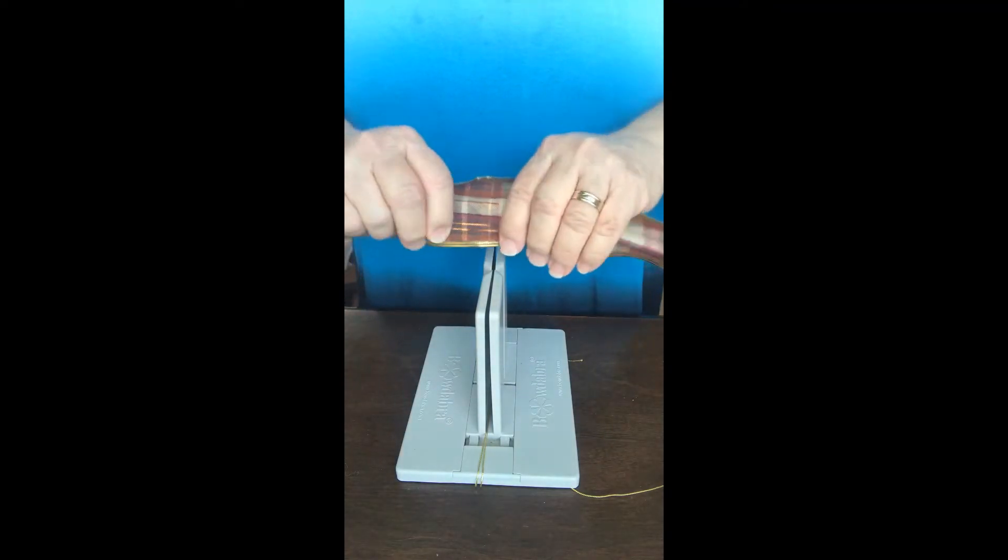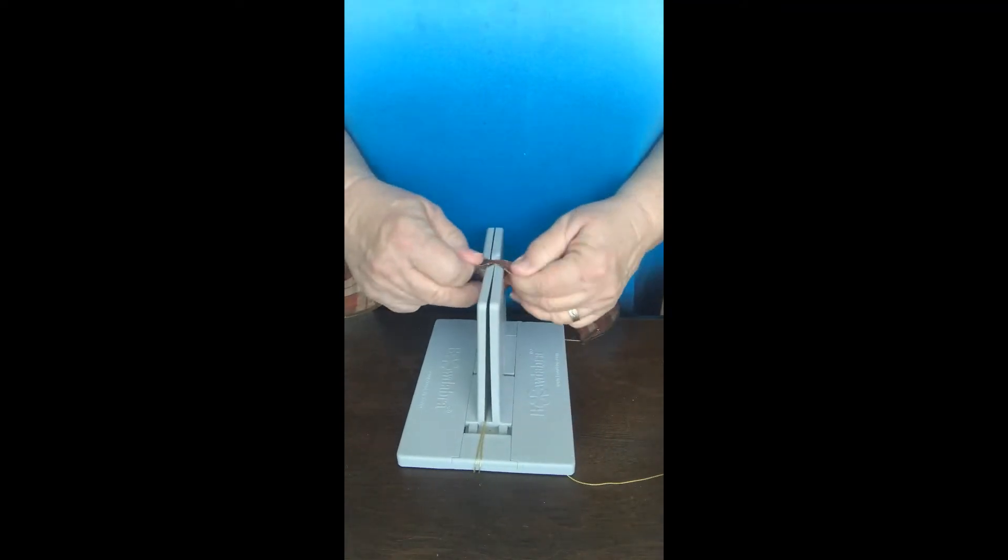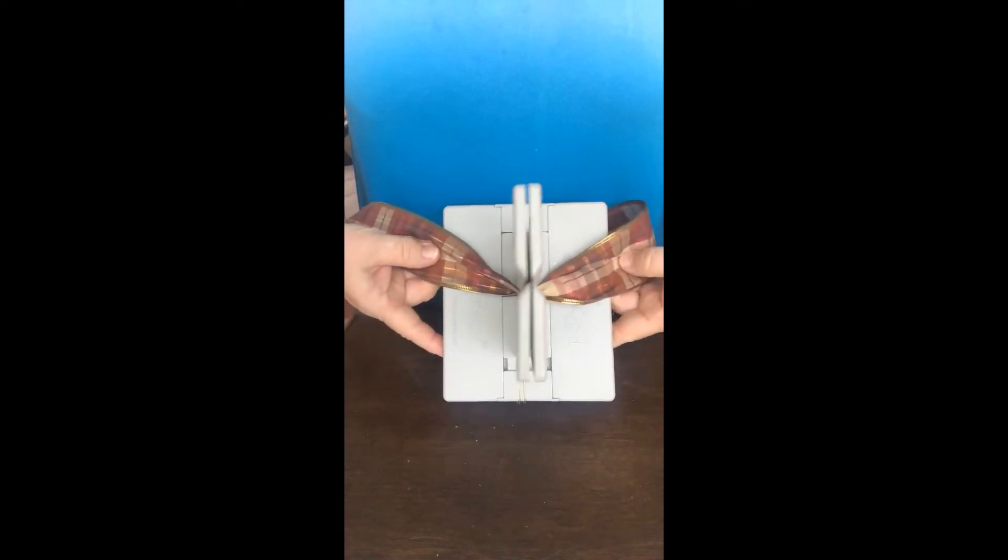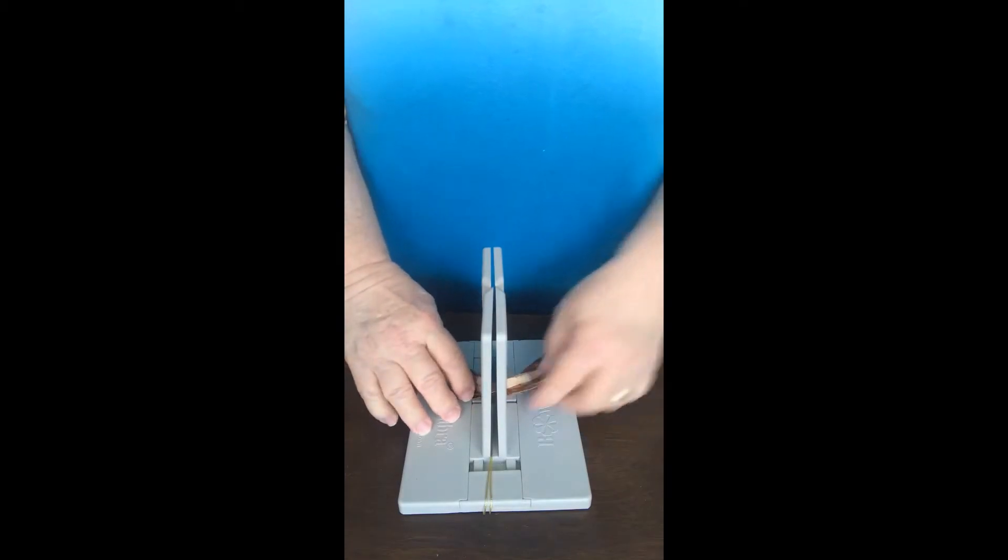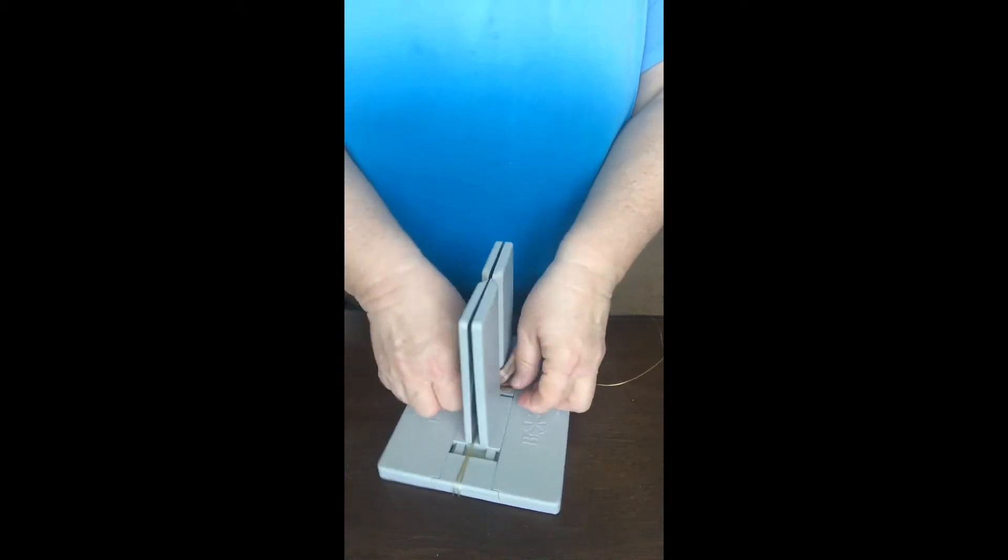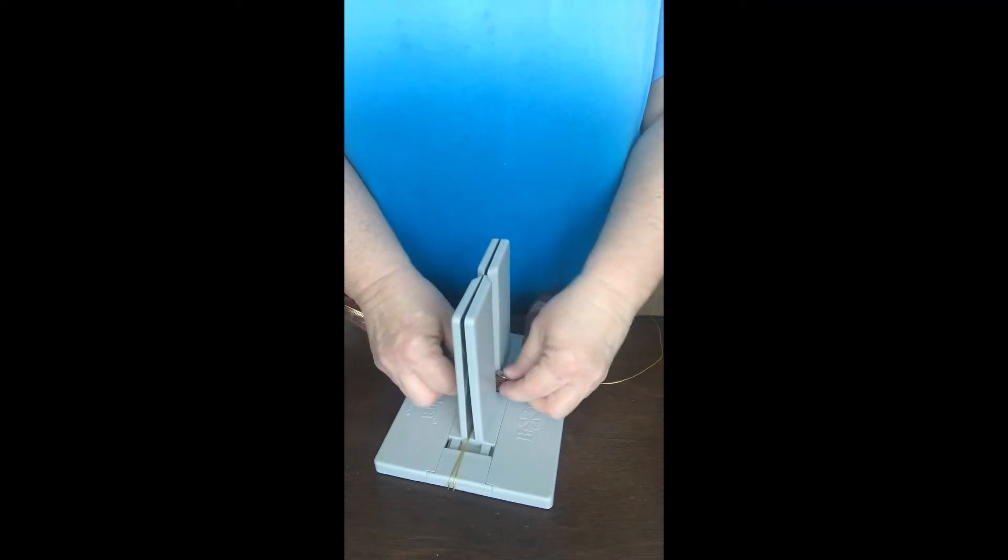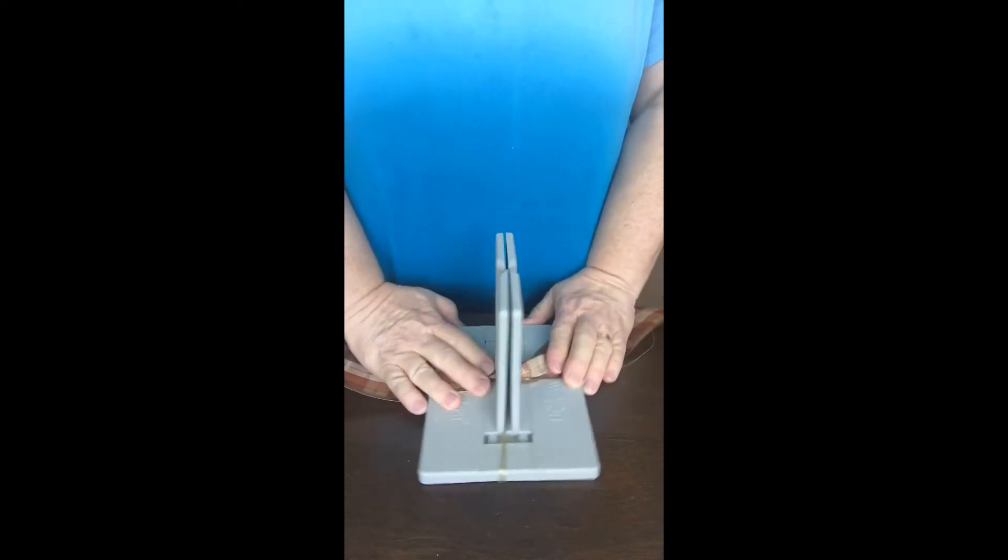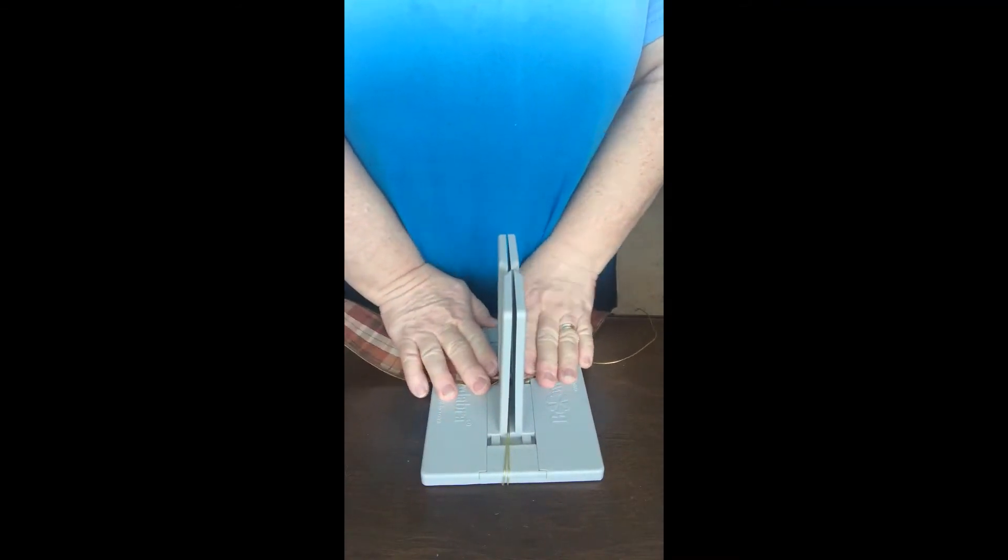The first thing you're going to do is simply push your ribbon down through the center of the Bowdabra. How far and how long depends on the kind of bow you're making, how long you want your tails, things like that. I'm just going to make a very simple bow just to demonstrate the Bowdabra.